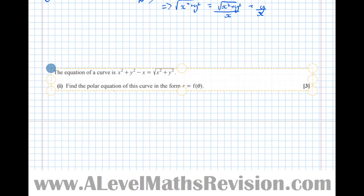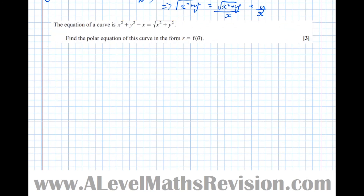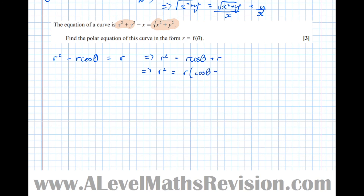How about we do another one, going the other way — taking a Cartesian equation and turning it into a polar equation. The question says the equation of a curve is x-squared plus y-squared minus x equals root of x-squared plus y-squared. Instantly, from the facts we derived, we can recognise root of x-squared plus y-squared as R, and x-squared plus y-squared as R-squared. So we get R-squared minus R cos theta equals R. Taking all the R terms to the right-hand side: R-squared equals R cos theta plus R, so R-squared equals R times (cos theta plus 1). Dividing by R, we get R equals 1 plus cos theta.